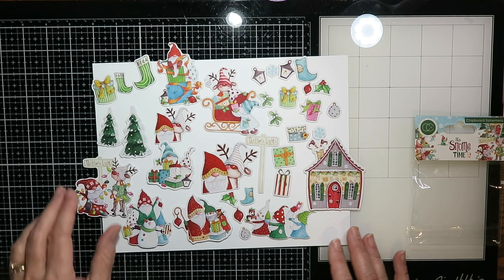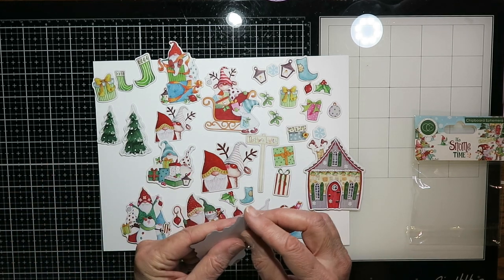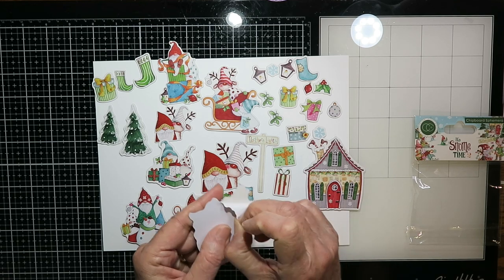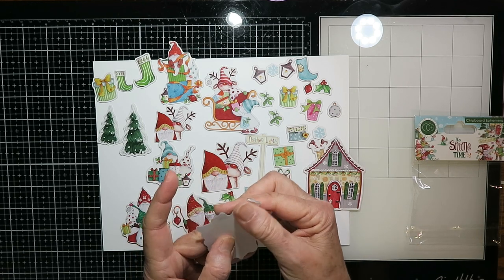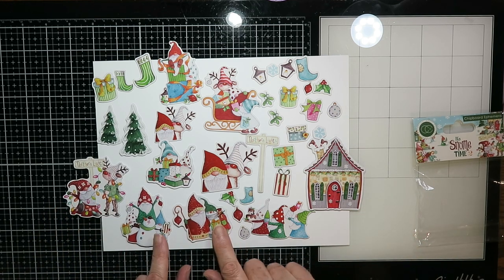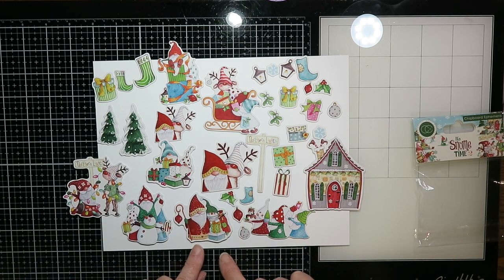This is the chipboard ephemera. Now all of this comes with an adhesive backing on it so these are really easy to just stick into your project and away you go. And it's all the same sweet images that you've seen all throughout the collection.